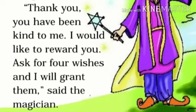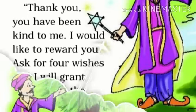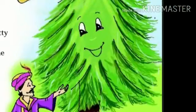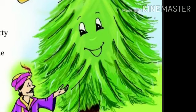"Thank you. You have been kind to me. I would like to reward you. Ask for four wishes and I will grant them," said the magician. Explanation: Shetty the magician was saying to the fir tree, "You saved me from rain. You were so kind to me." We all know he was a magician, so obviously he could do magic. He said to the fir tree that its four wishes would come true.